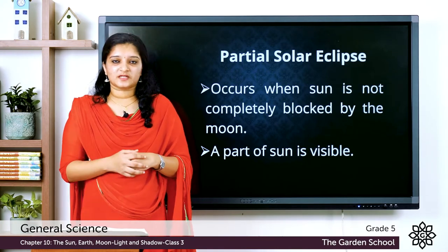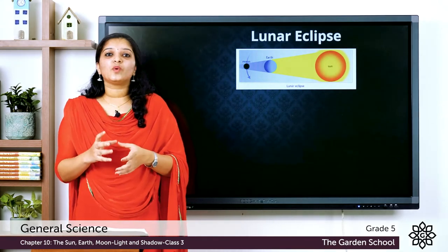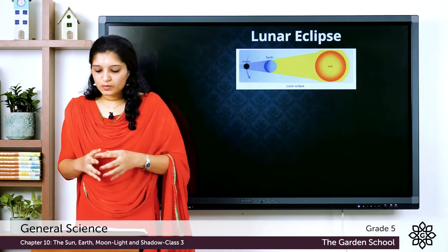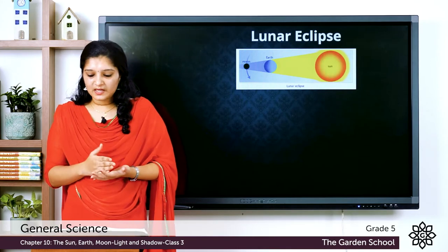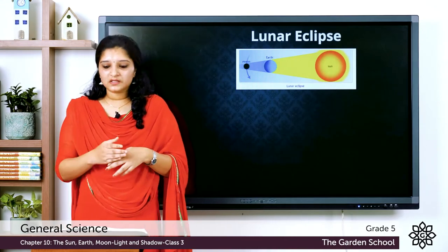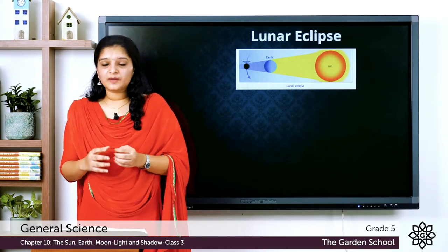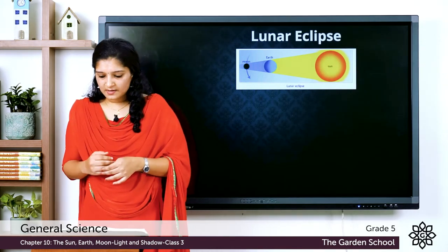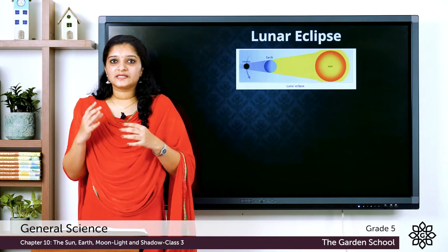Now let's study the second type of eclipse: the lunar eclipse. On a full moon night, when the moon is visible as a complete disk in the night sky, the Earth passes between the Sun and the moon. On such a night, the Earth blocks the sunlight falling on the moon, and the moon gets covered by the Earth's shadow. This phenomenon is known as the lunar eclipse.